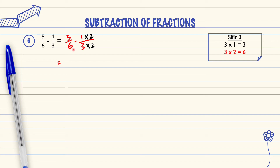5 over 6, we rewrite it. 1 times 2 equals 2; 3 times 2 equals 6.